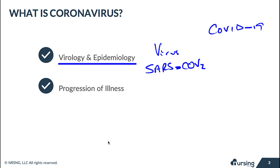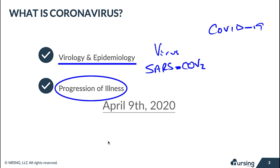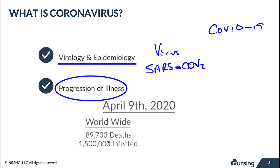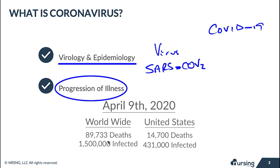When we talk about epidemiology, we look at the study and progression of the illness. Back at the beginning of March 2020, there were about 150 cases and 50 deaths in the United States. As of April 9th, 2020, there have been 89,733 deaths and 1.5 million infected worldwide, with 431,000 confirmed cases and 14,700 deaths in the United States — showing just how aggressive this illness is.